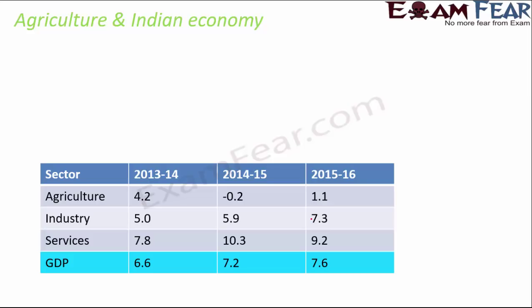How do we know that? It is decided by GDP. GDP stands for Gross Domestic Product and it basically determines the economic performance of a country. If the GDP value is increasing, that means the economic performance of the country as a whole is also increasing.